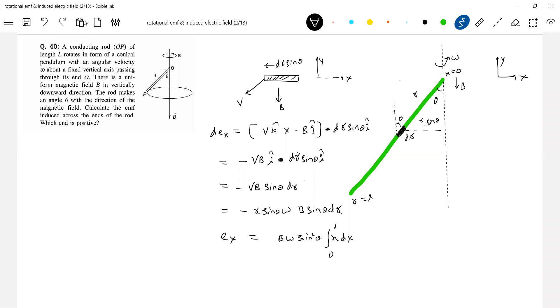I think now, x is not, x is original. R is along the length of the rod. So how much? It should be equal to B omega sine square theta L square by 2.